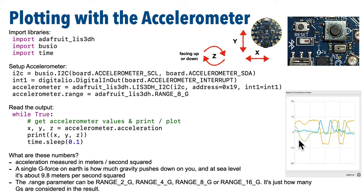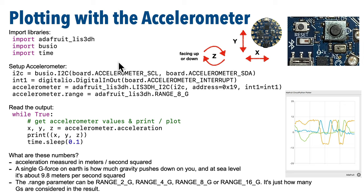You might be wondering what these numbers mean. Acceleration is measured by most accelerometers in meters per second squared. G-force is the Earth's gravitational pull at sea level — that's about 9.8 meters per second squared. So if you've got your Circuit Playground Bluefruit lying on its back, you should see the z-axis printing out values around 9-ish meters per second squared. There's always a little variation even when you're not moving your device, as sensors always have some noise.